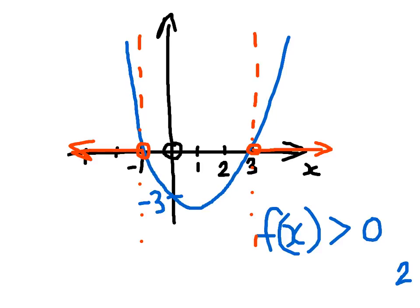And because our inequality symbol is greater than zero, therefore the inequalities that satisfy this are going to be x is less than minus 1 and x is greater than 3. So those are the range of values that satisfy our original inequality.